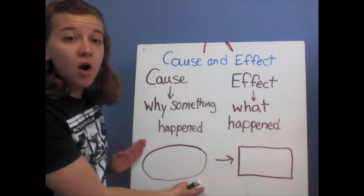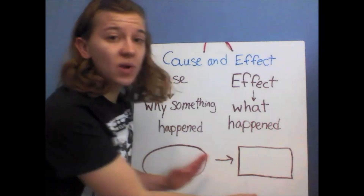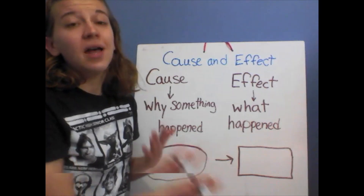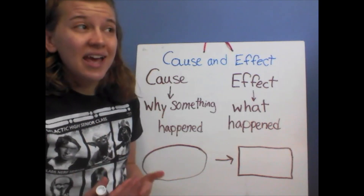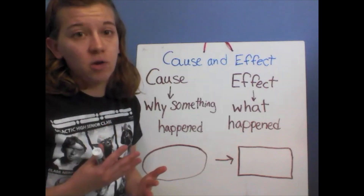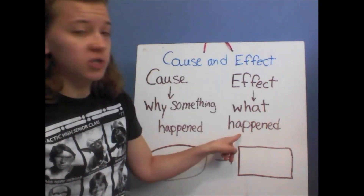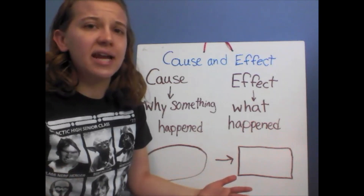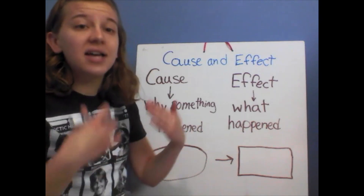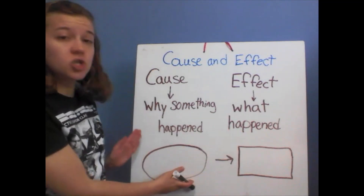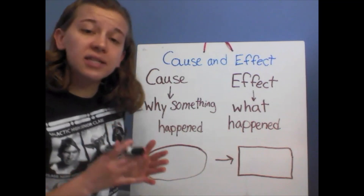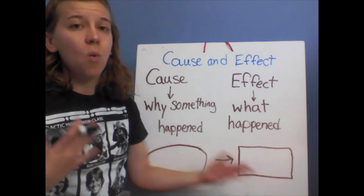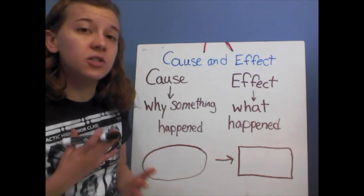We usually have cause on the left and effect on the right, because the cause happens first and the effect happens after it. But sometimes when you're trying to figure out the cause and effect, it can be easier to go backwards. You can find the effect first — figure out what happened first — and then ask, why did that happen? Because this happened, and then that is your cause. So sometimes it's easier to start with what happened, figuring out the effect, and then asking why it happened and finding the cause.